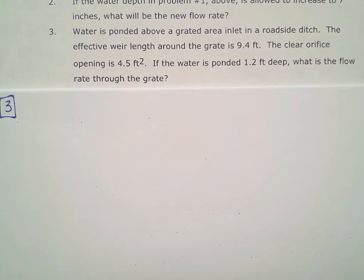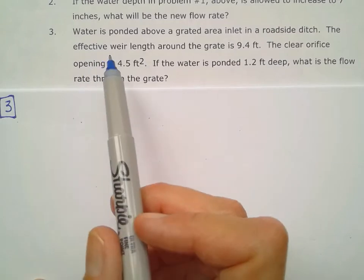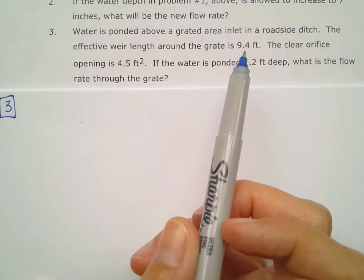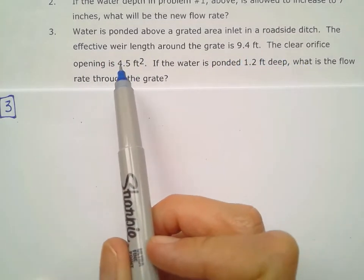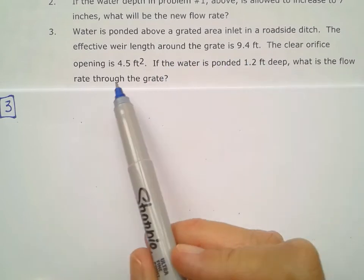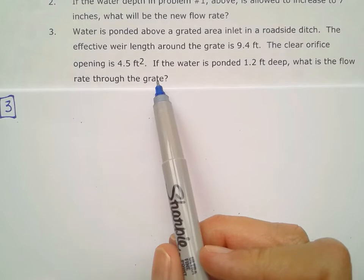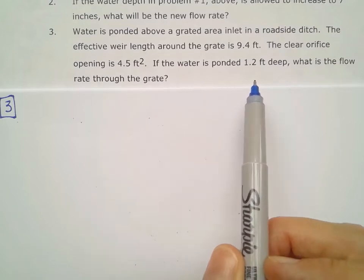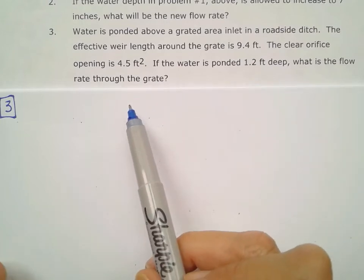Alright, for FE Hydraulics Chapter 6 Homework Problem 3, we're told that water is ponded above a graded area inlet in a roadside ditch. The effective weir length around the grate is 9.4 feet. The clear orifice opening is 4.5 feet squared. If the water ponded is 1.2 feet deep, what is the flow rate through the grate?